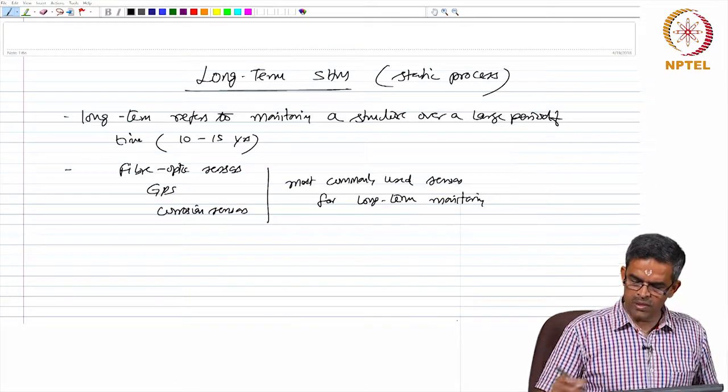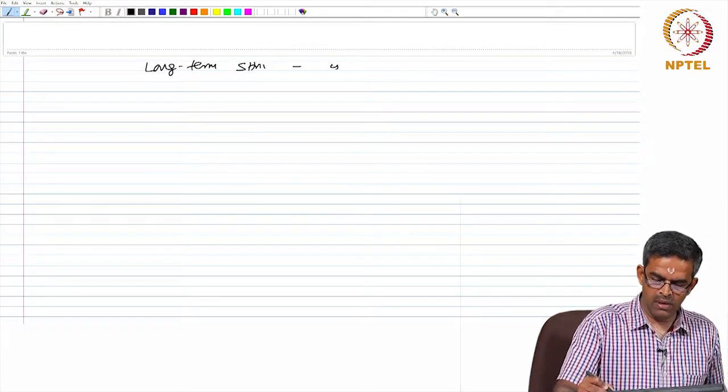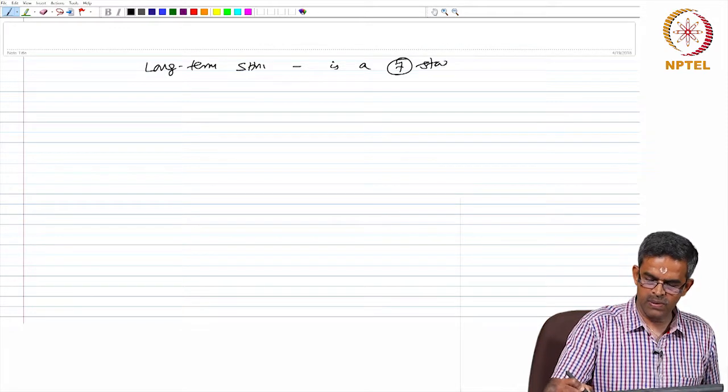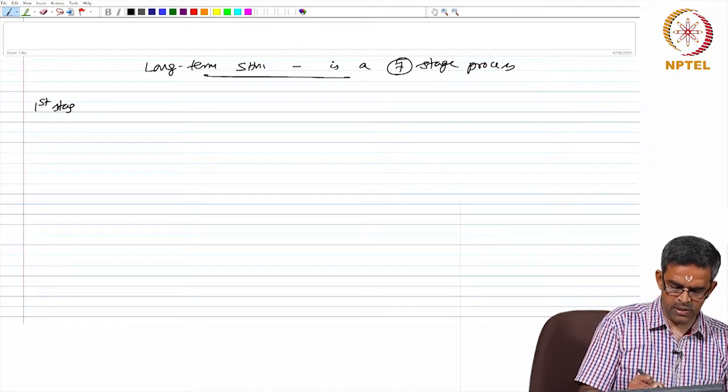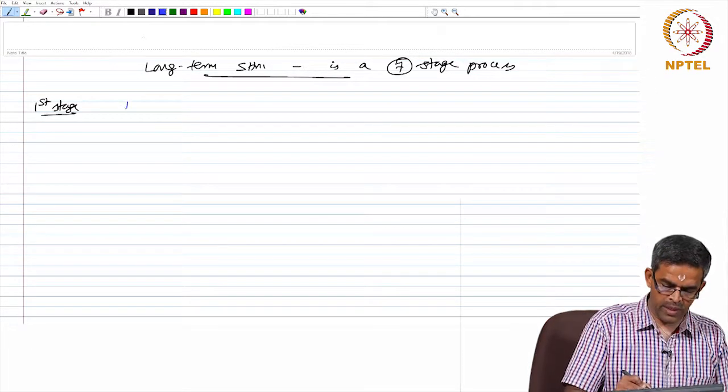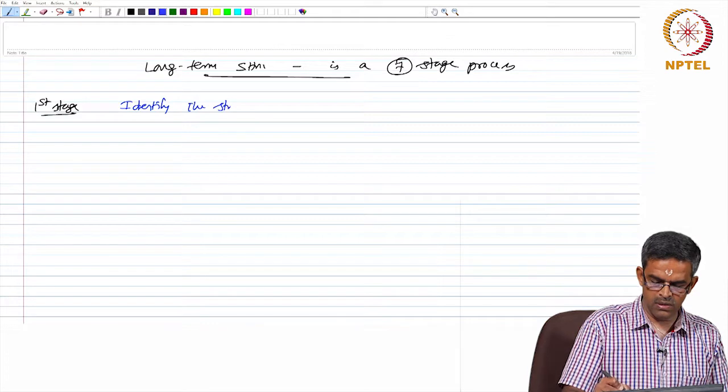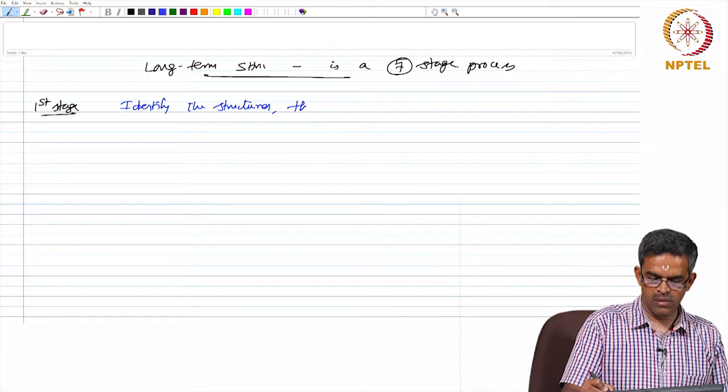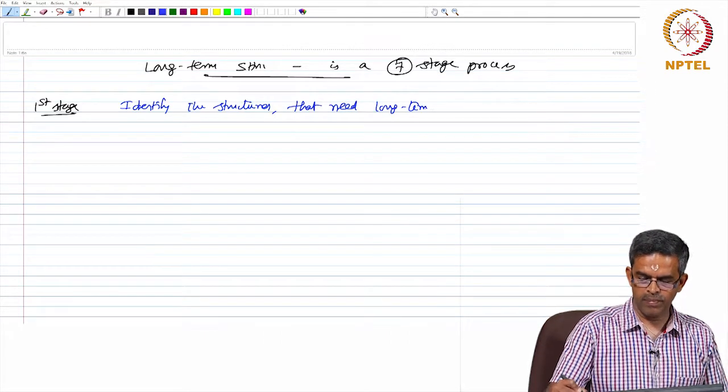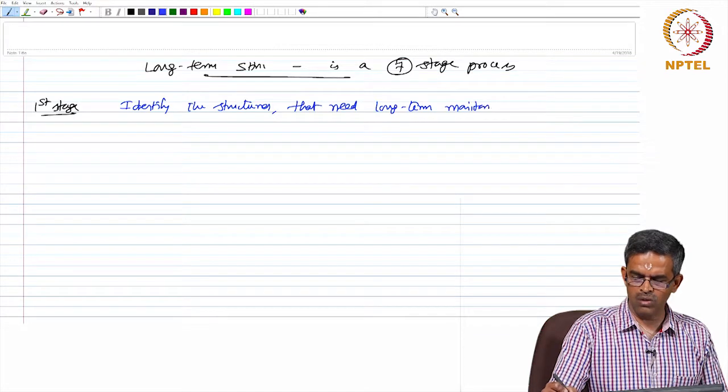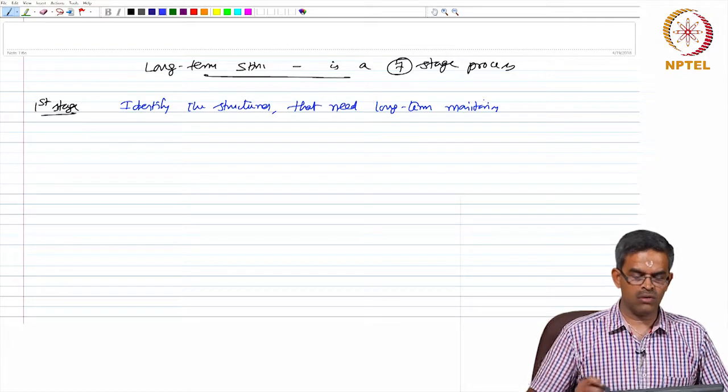Now, long-term monitoring is a seven-stage process. The first stage is to identify the structures that need long-term monitoring. Generally, we do not do long-term monitoring for all kinds of structures.